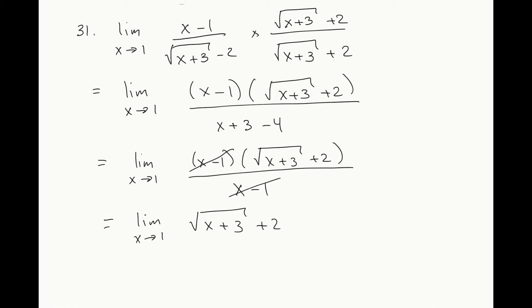Now we can find the limit by substitution: sqrt(1 plus 3) plus 2, which comes to 2 plus 2, equal to 4.